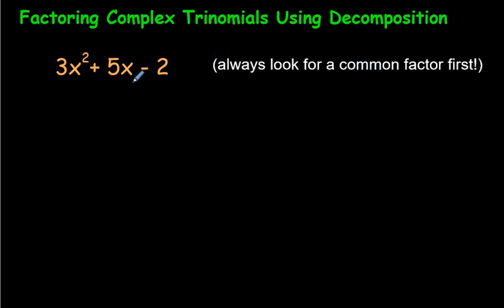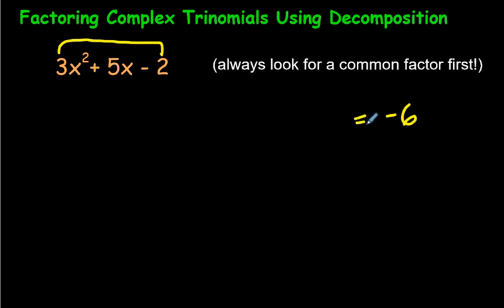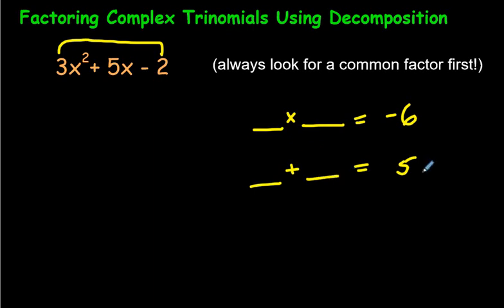Here's how you do factoring by decomposition. You start by multiplying the 3 by the 2 — the first term by the last term, the coefficients, that is. So 3 times negative 2 is negative 6. And the number in the middle, just like regular trinomial factoring, is going to go right here. We're going to come up with two numbers that multiply to give us negative 6, and those exact same two numbers have to add to make 5.